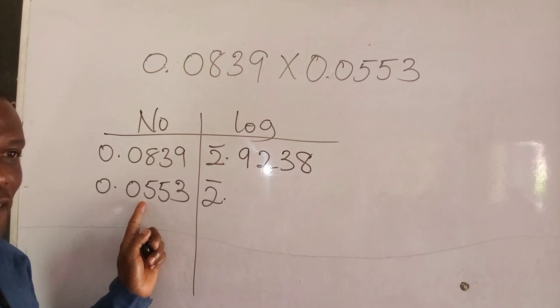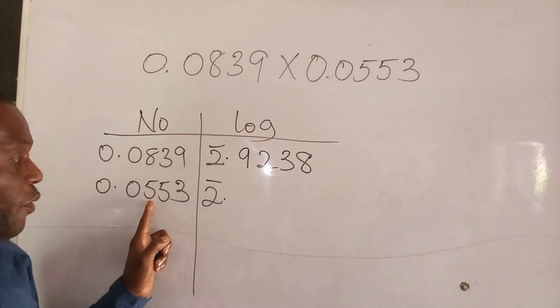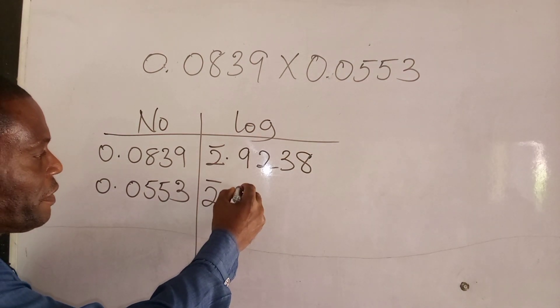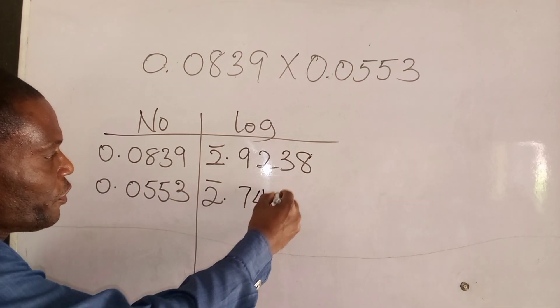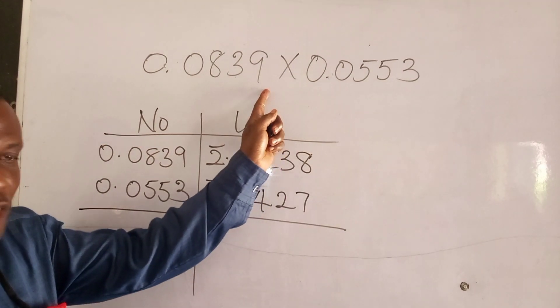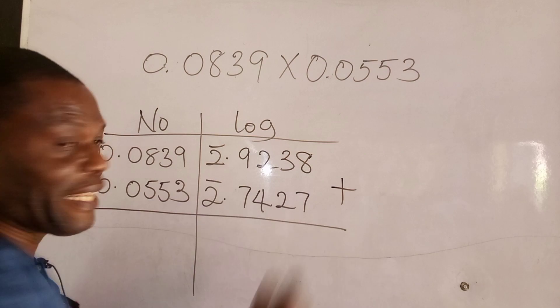What is the mantissa for using your four figure table? 55 under 3? 7427. 7427. And because it is multiplication, we are going to say it is addition.